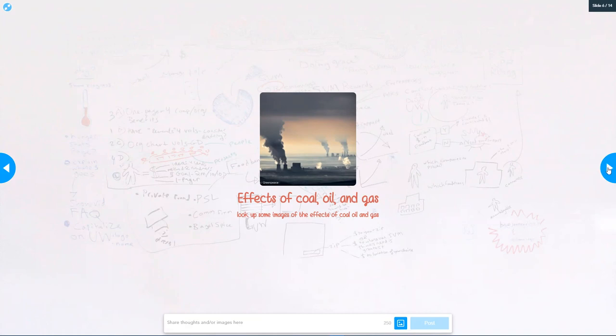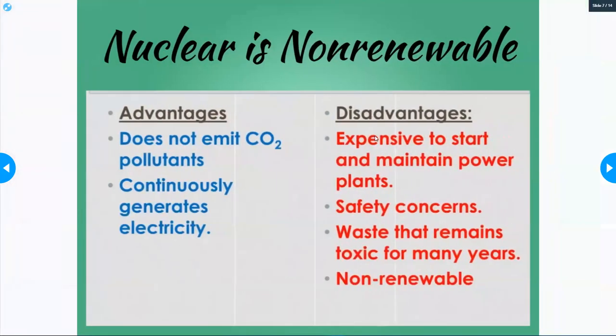Nuclear is also a non-renewable resource. It does have its advantages—it doesn't emit any CO2 and it continuously generates electricity. The reason it's non-renewable is because it's made from uranium, and uranium is in ore or a mineral that's found in rocks. It uses such a tiny amount of uranium that we wouldn't run out anytime soon, so even though it's non-renewable, it's still going to last longer than coal, oil, and gas.